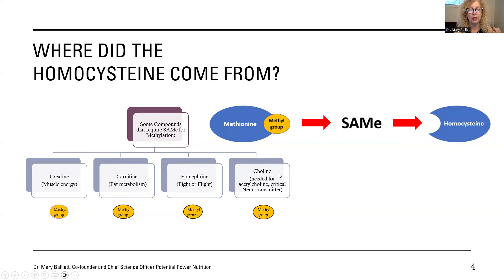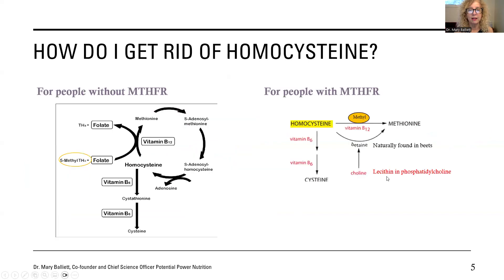If I'm doing neurotransmission using acetylcholine — one of the most important neurotransmitters for the central nervous system, the parasympathetic system, the sympathetic system, and the neuromuscular junction — anytime I'm doing the majority of my neurotransmission, I am using that methyl group to make choline, and therefore I'm elevating my homocysteine level. Therefore, I want to get rid of the homocysteine.